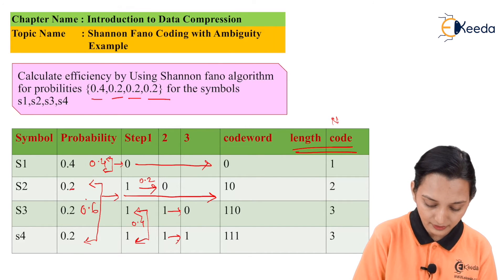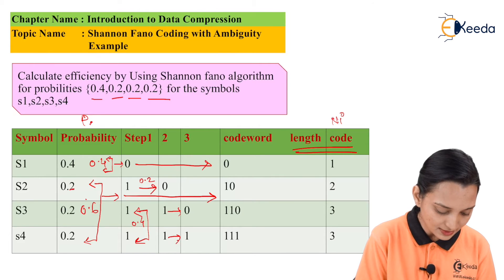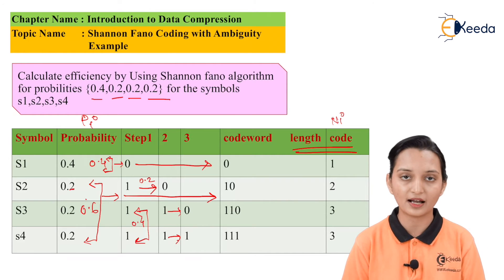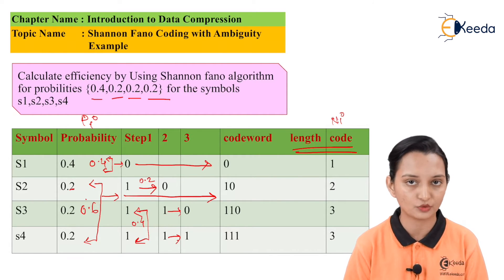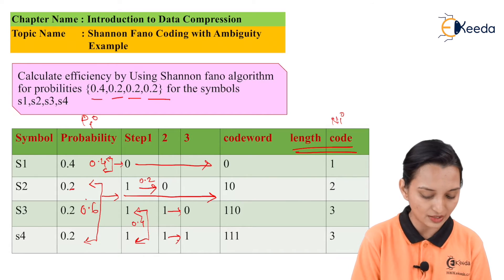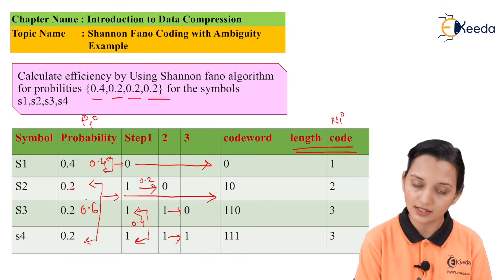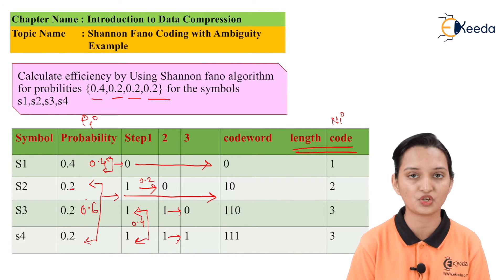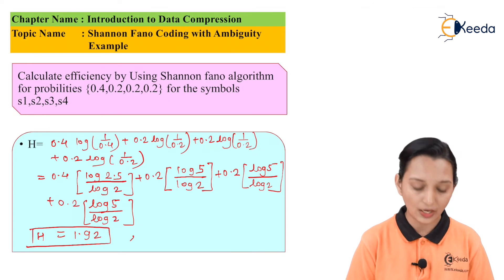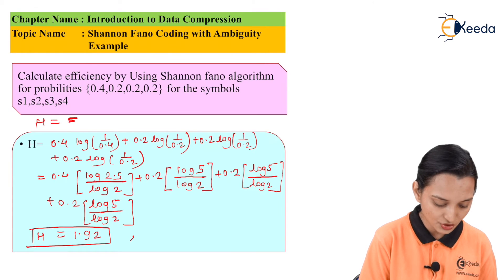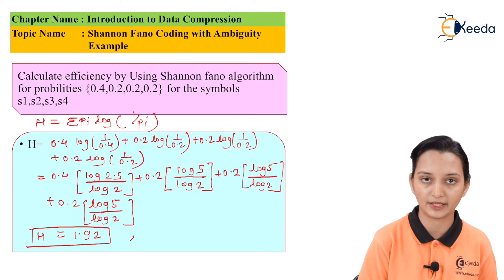The codeword lengths are denoted NI and the probabilities are PI. Now we need to calculate H (entropy), L (average length), E (efficiency), and RE (redundancy) — the factors we calculate using Shannon-Fano. PI values are given in the example, and NI values are found through the Shannon-Fano algorithm.